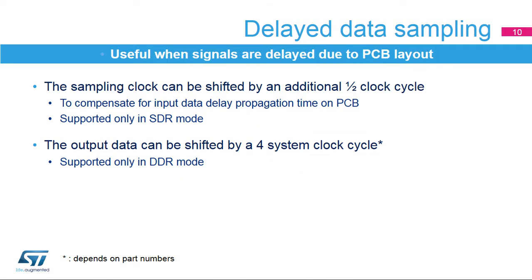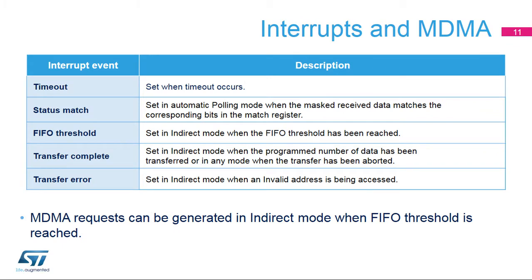Delayed data sampling allows users to compensate for the delay of signals due to constraints on the PCB layout optimization. It allows applications to shift the data sampling time by an additional one-half clock cycle when operating in SDR mode. In DDR mode, the output data can be shifted by a one-quarter system clock cycle to relax hold constraints.